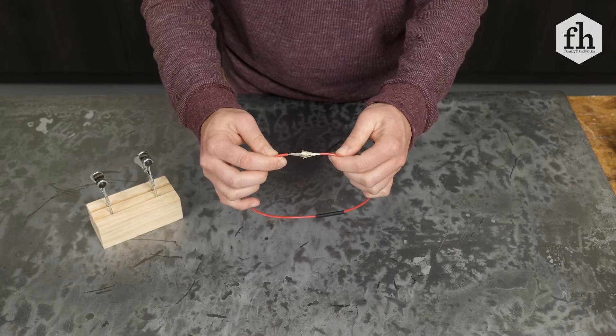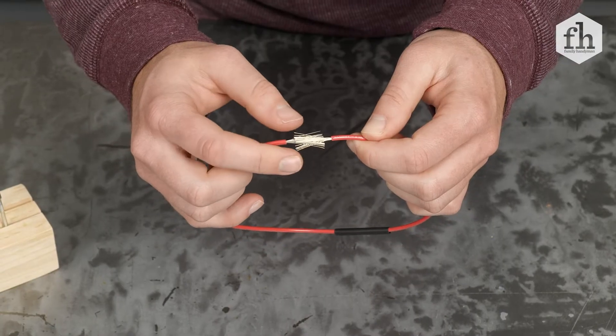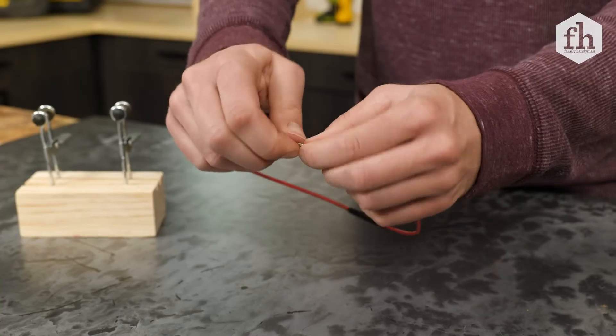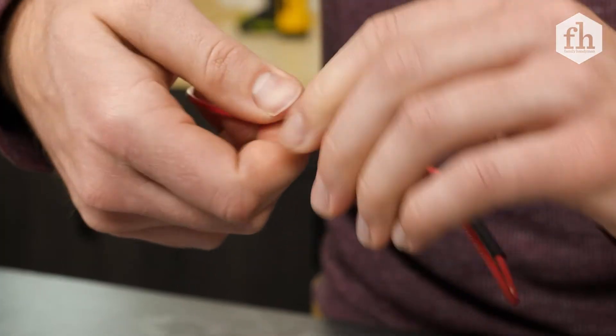Connect wires by spreading and intermeshing the wire ends together, then twisting until completely tight and no strands are sticking up.